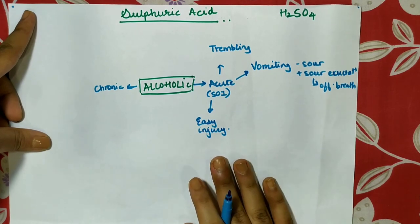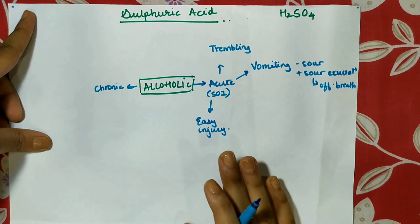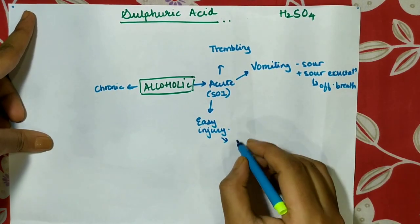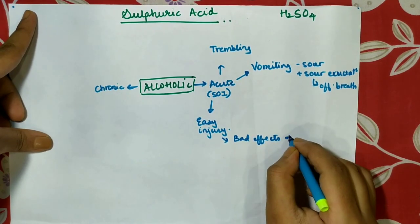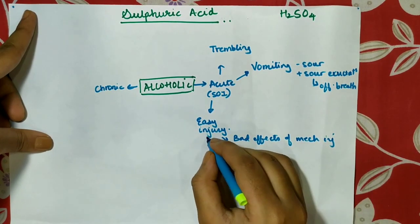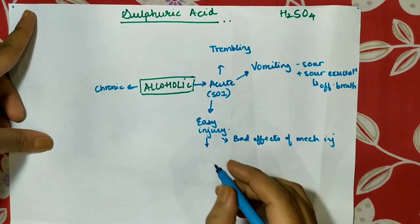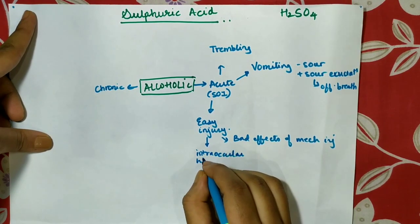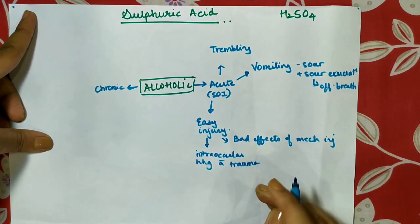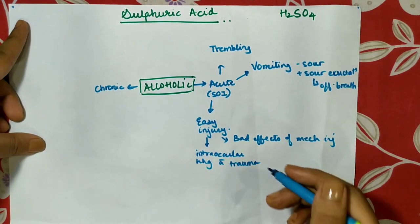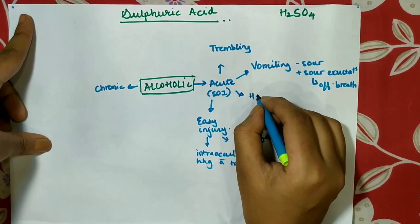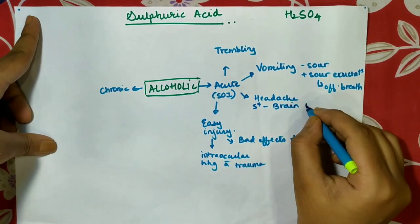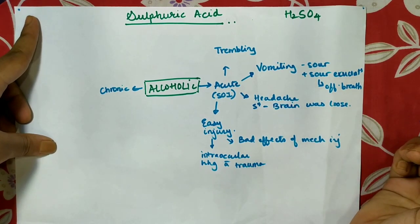A lot of deaths due to alcohol involve easy injuries because the person doesn't have great pain perception when intoxicated. There is an ailment from bad effects of mechanical injury. There is also misjudgment — the person lacks good judgment and may get into fights and injure himself. There is a symptom of intraocular hemorrhage after trauma, likely after a fight. The post-acute hangover headache presents with a sensation as if the brain is loose, and the pain is more in the occiput.